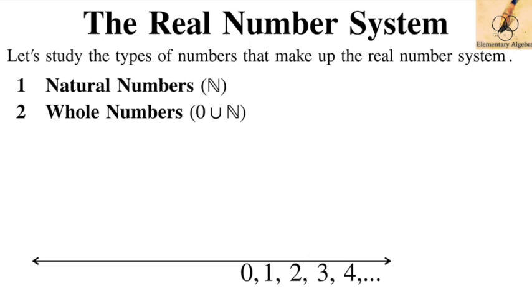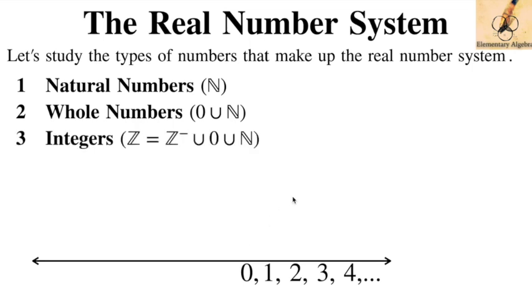Now, for every positive integer there exists a negative integer which is its pair. If we list all the pairs — negative one, negative two, negative three, and so on — we call them the integers. Integers are denoted by the double-script Z. Why Z? Z stands for 'Zahlen,' a German word for numbers. George Cantor is the one who created these symbols, so it's German.